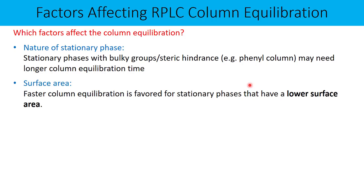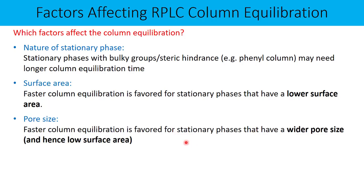Surface area is another factor. Faster column equilibration is favored for stationary phases that have a lower surface area. Now, lower surface area may not be good for your selectivity, resolution, or retention, but it is very much favored for faster column equilibration. Regarding pore size, faster column equilibration is favored for stationary phases with a wider pore size. Wider pore size results in lower surface area.